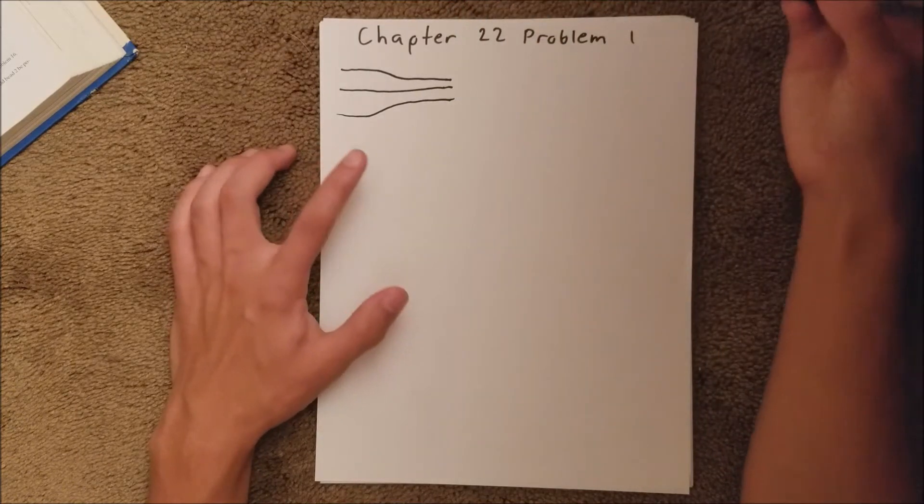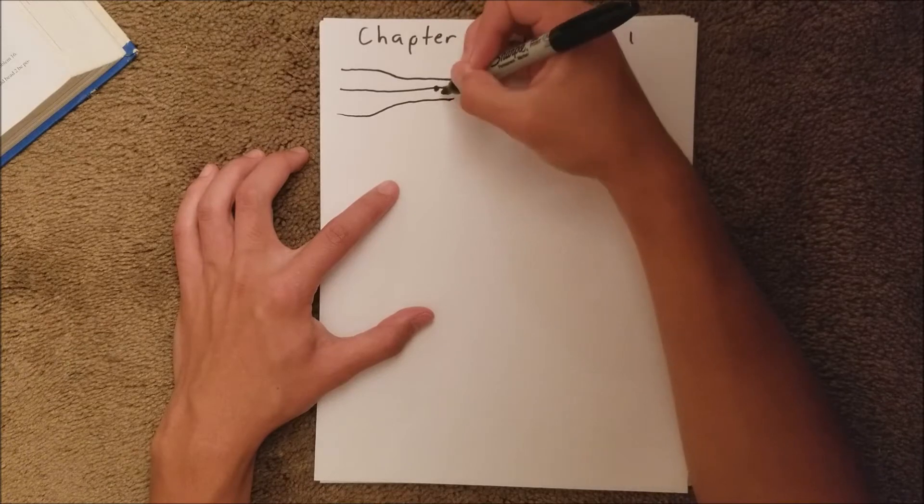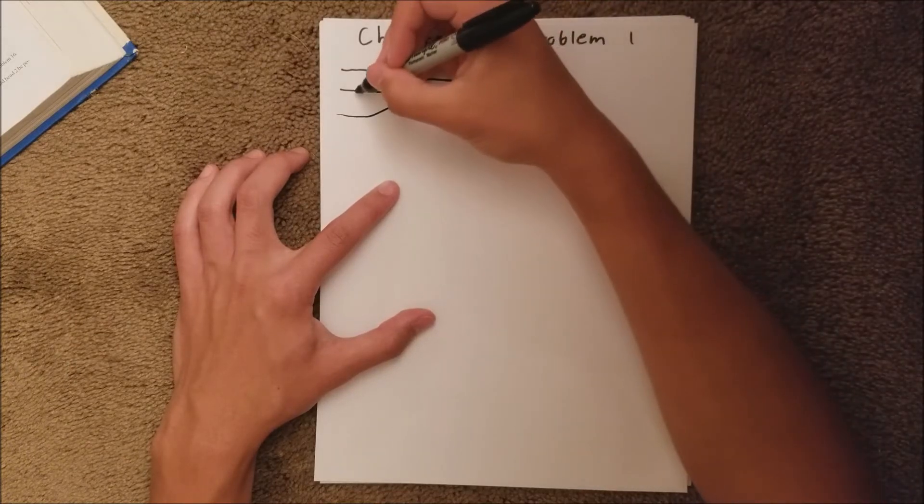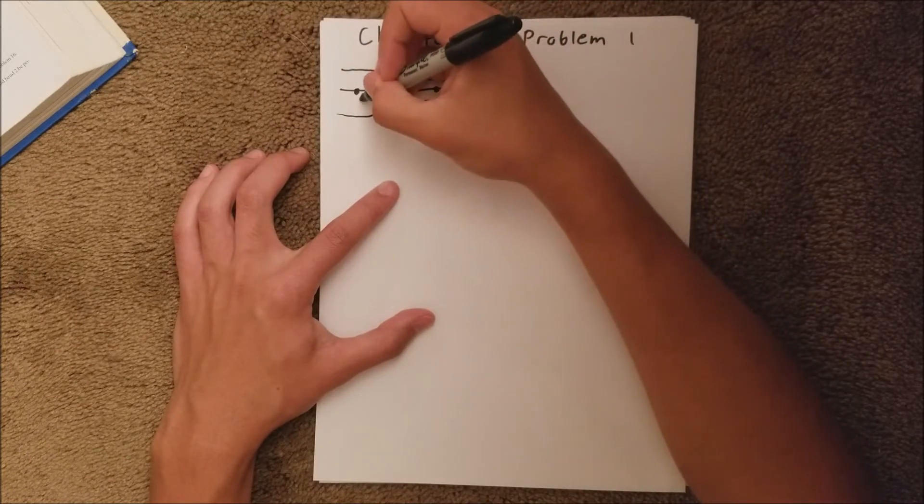We have a point in here. We'll call that point 1. We have a point over here. We'll call that point 2.